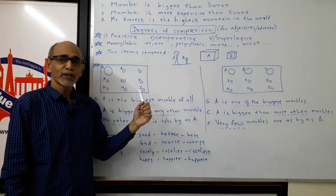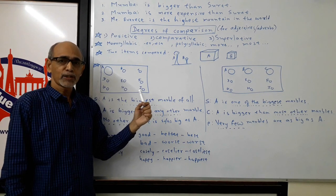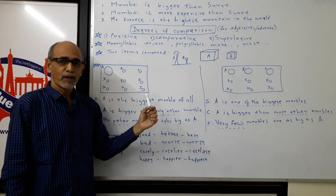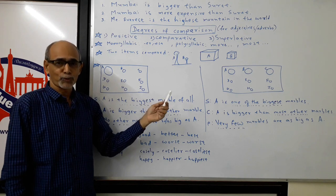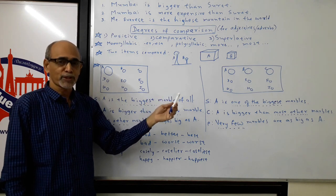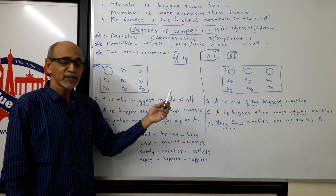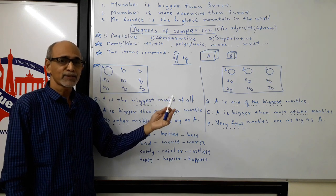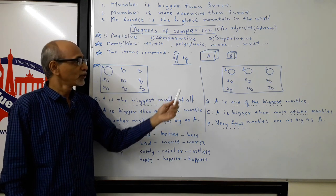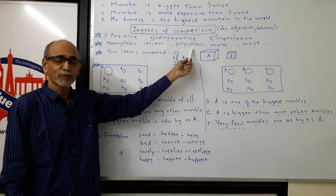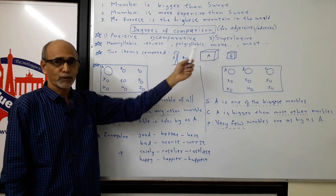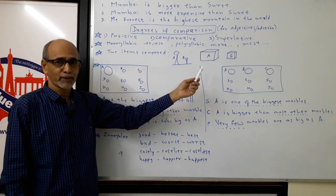If the word is interesting, in-ter-est-ing, that will require more and most. More interesting and most interesting. Expensive: ex-pen-sive, three syllables. Such polysyllabic words will require more and most for comparative and superlative degree.